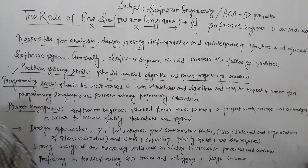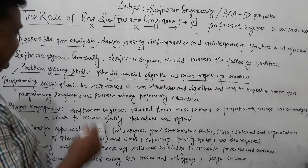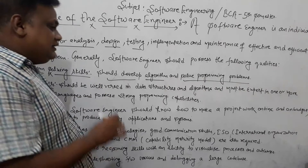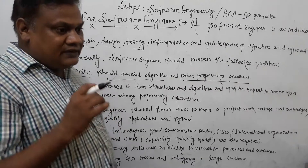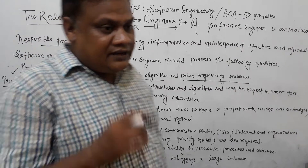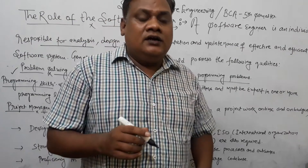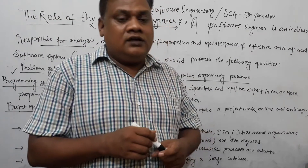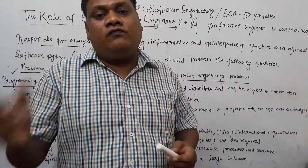A good software engineer is a very good algorithm writer. Next, programming skills — most important nowadays. Programming skills are the best and very important skills for a software engineer.